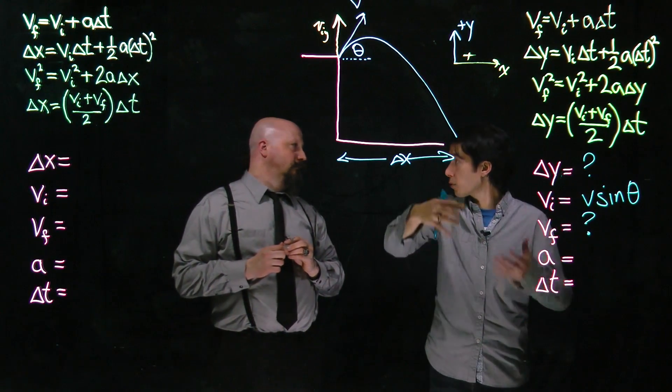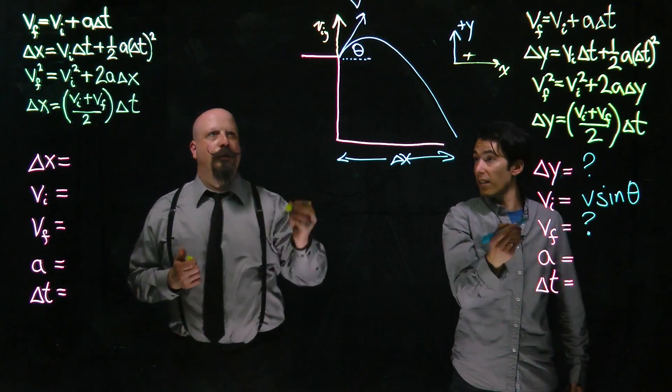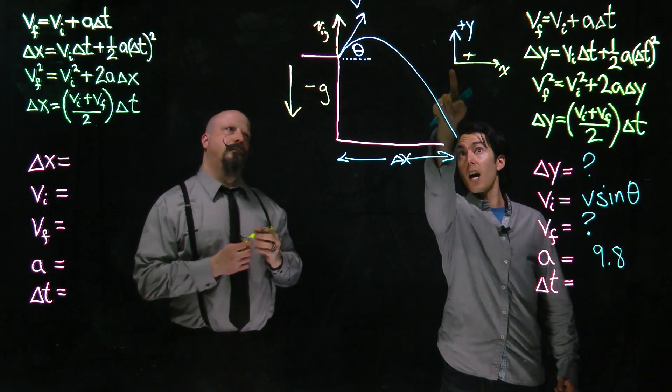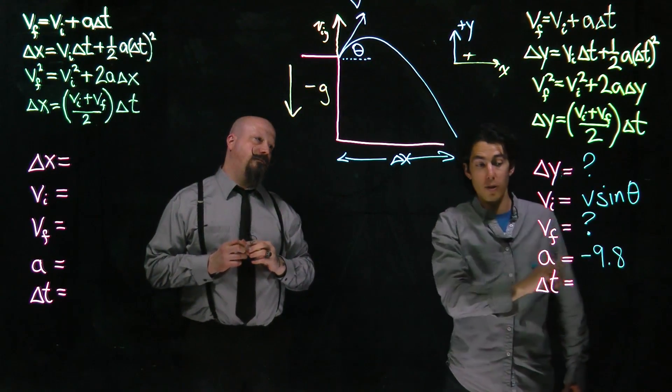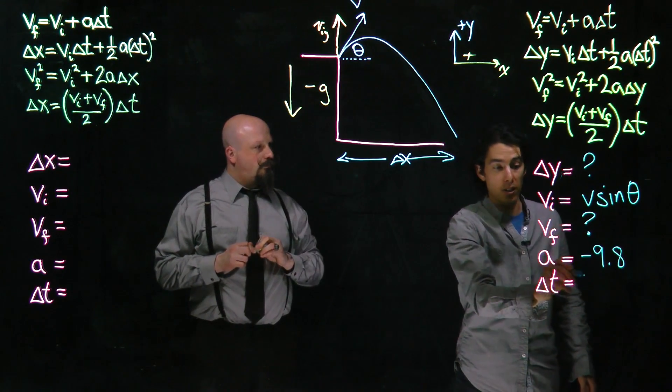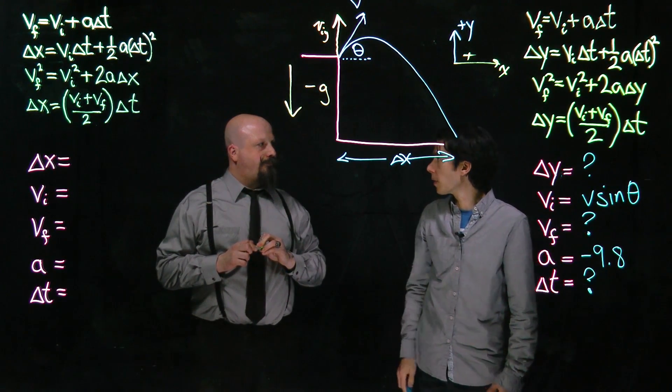But I do know the acceleration, because gravity accelerates everything downwards at 9.8 meters per second. Constantly pulling it down. Yeah, and because I defined up as my positive y direction, I've got to make sure to put a minus sign there. And then the last quantity time, again, there's nothing mentioned in this problem about time, so I've got a question mark there.